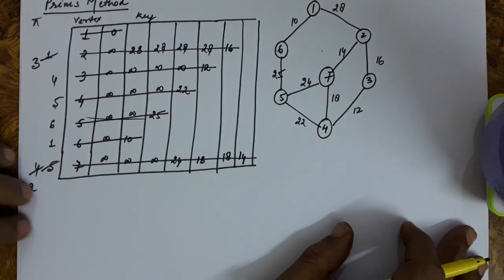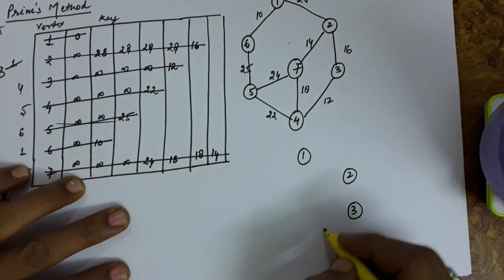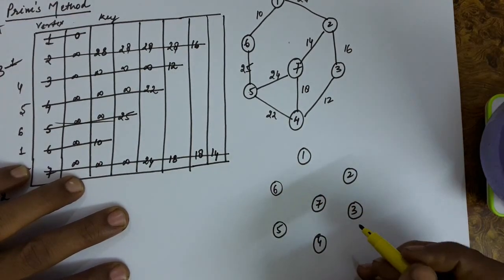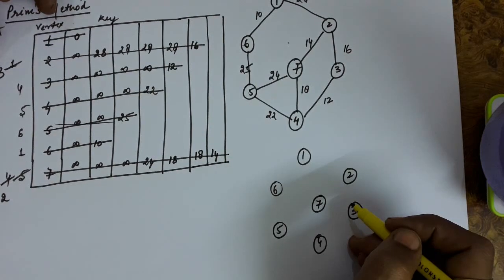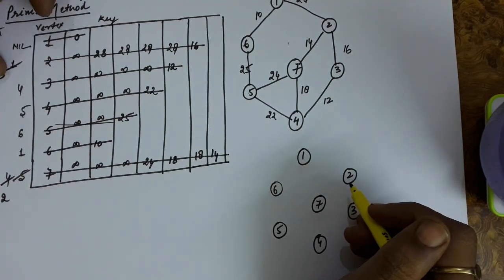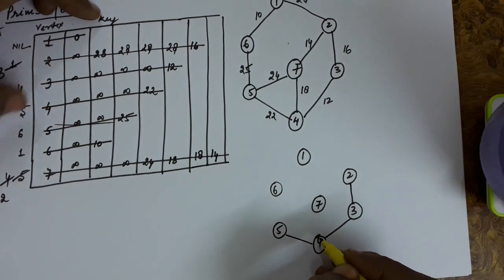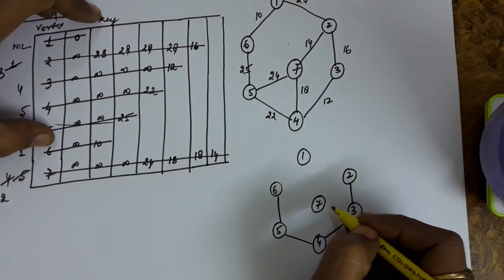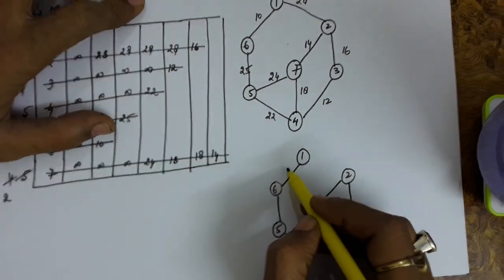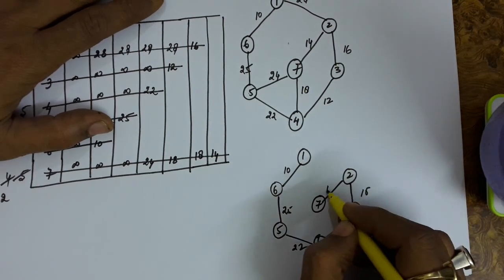Now let us see what we have achieved. Drawing the vertices 1 through 7 and using the predecessor information: no predecessor for 1; predecessor of 2 is 3, so draw edge 3-2; predecessor of 3 is 4, draw edge 4-3; predecessor of 4 is 5, draw edge 5-4; predecessor of 5 is 6, draw edge 6-5; predecessor of 6 is 1, draw edge 1-6; predecessor of 7 is 2, draw edge 2-7. The edge costs are 10, 25, 22, 12, 16, and 14.